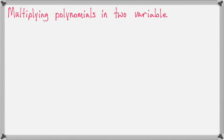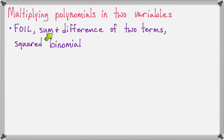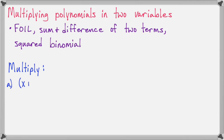Now we'll look at multiplying polynomials together, so 2 terms times 2 terms. You want to watch for 2 terms times 2 terms problems where you can use the FOIL method, or the sum and difference of 2 terms, or the squared binomial shortcuts that we learned. Here are a couple of examples.